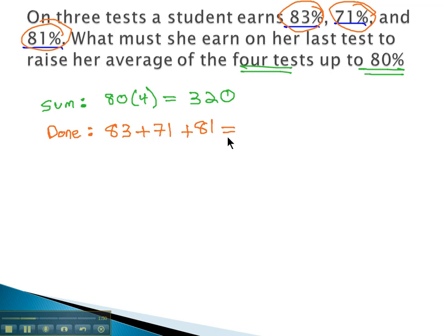If we add that up on our calculator real fast, 83, 81, and 71 equals 235 points that she's earned so far.